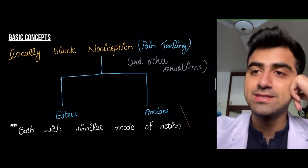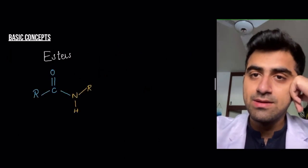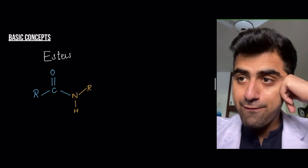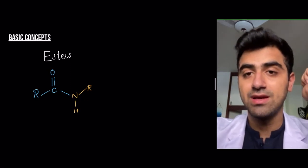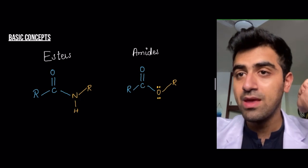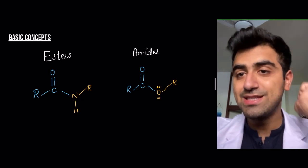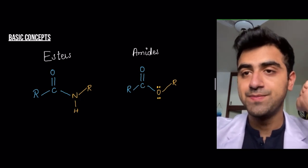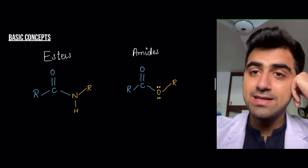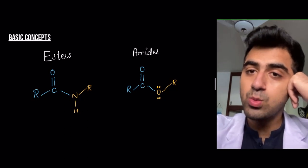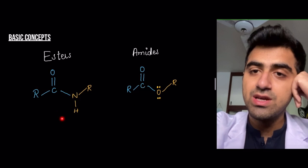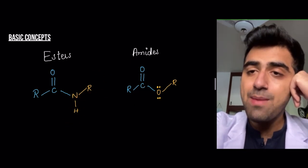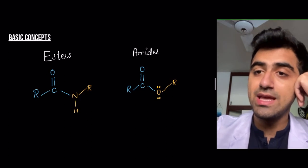This is the structure of esters — I don't think you need to remember this; I've added it for the sake of completeness. This is the structure of amides. The way I remember it: esters is a more difficult word to say, so the molecule itself is more complex and contorted, with a side chain. Amides is an easier word, so the molecule is simpler.